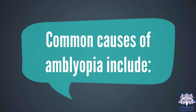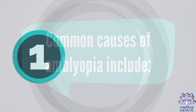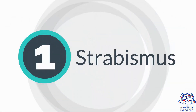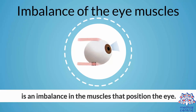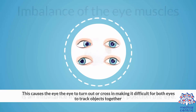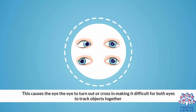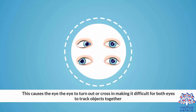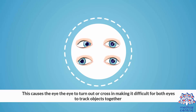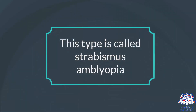Common causes of amblyopia include strabismus, which is an imbalance in the muscles that position the eye. This causes the eye to turn out or cross in, making it difficult for both eyes to track objects together. This type is called strabismus amblyopia.